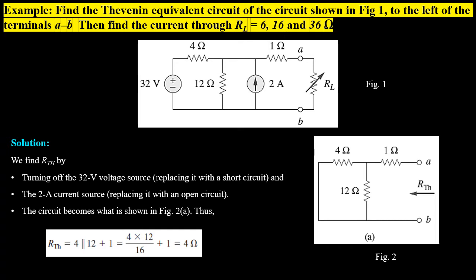In this example, for the circuit shown in figure 1, we find the Thevenin equivalent to the left of terminals A to B and then find the current for loads of 6 ohms, 16 ohms, and 36 ohms. First, we remove the load and find VTH and RTH. For RTH we turn off independent sources: the 32-volt source is replaced by a short circuit and the 2-ampere current source by an open circuit. Using series-parallel combination, the 4-ohm resistor is in parallel with the 12-ohm resistor giving 3 ohms, which is in series with the 1-ohm resistor, yielding RTH = 4 ohms at terminals A to B.